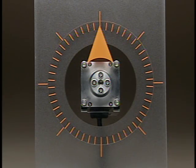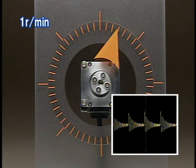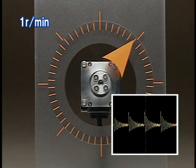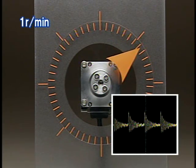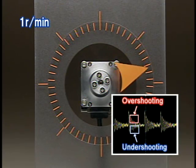Let's operate the motor at different speeds and measure the vibration component voltage. This is the voltage fluctuation at 1 revolution per minute. The largest fluctuation corresponds to the time when the motor makes a one-step movement. It is followed by overshootings and undershootings.